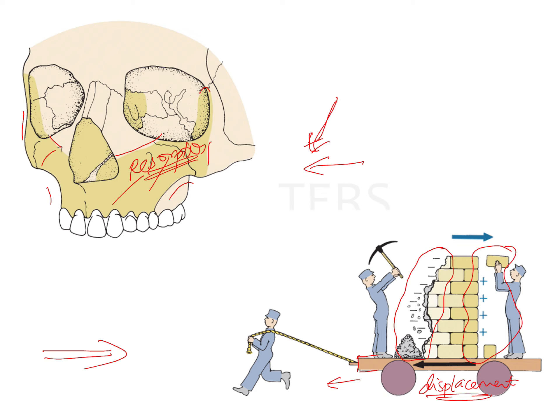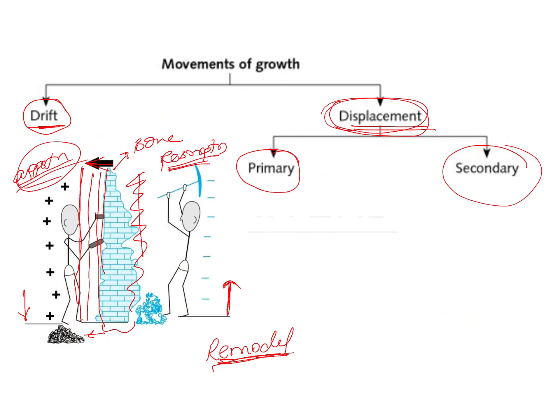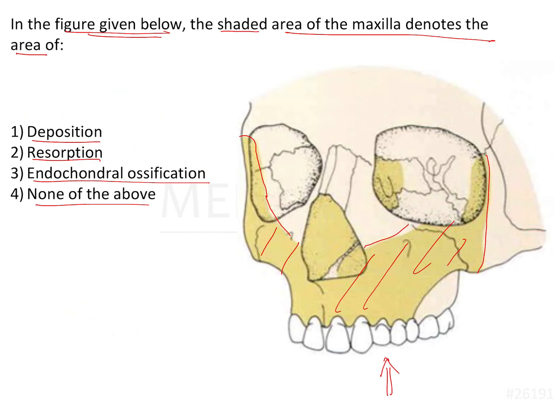It is not necessary that the remodeling changes are always additive or always in the direction of the translation — sometimes they can also oppose it. In the maxilla, the movement of the drifting is in the opposite direction to the displacement. This is unique to the maxilla. So the anterior surface is actually resorptive, and in this image where the shaded area has been shown, this is the area of resorption.